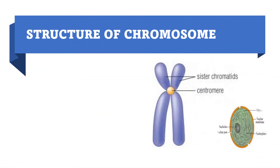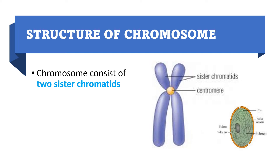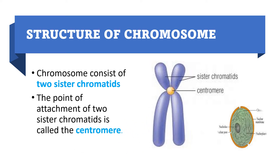Let us learn the structure of chromosomes. Chromosomes consist of two sister chromatids. These two sister chromatids are joined at a particular area. The point of contact of two sister chromatids is called the centromere.